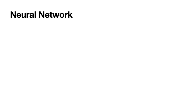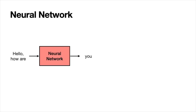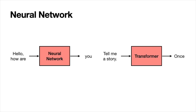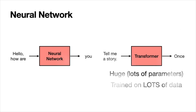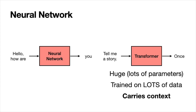So how is that different from neural networks? With a neural network, you can input 'hello, how are' and it outputs the next word. With a transformer, you can also input 'tell me a story' and it says 'once.' The difference between transformers and neural networks is: number one, they are huge — they have tons and tons of parameters. They are trained on lots and lots of data. But the most important difference is that they carry context, and I'll get to that in a bit.